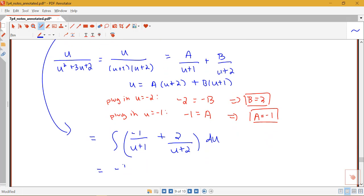So I'm going to have negative log of the absolute value of u plus 1 plus 2 log of the absolute value of u plus 2 plus c.